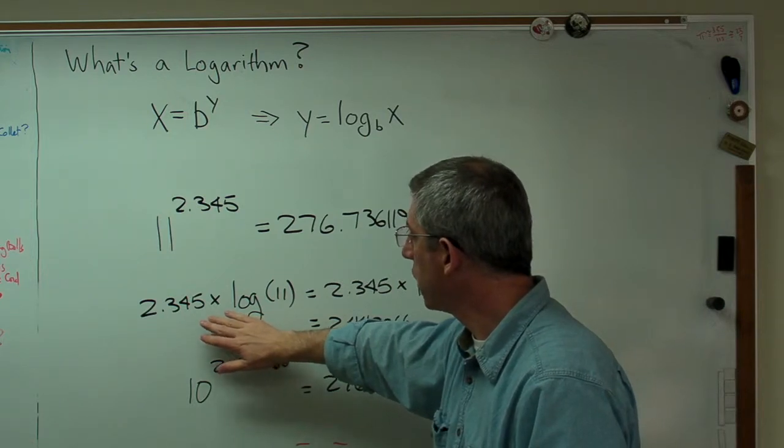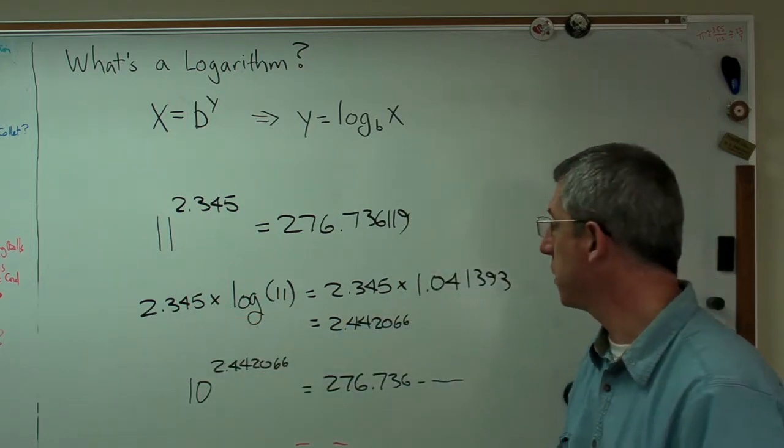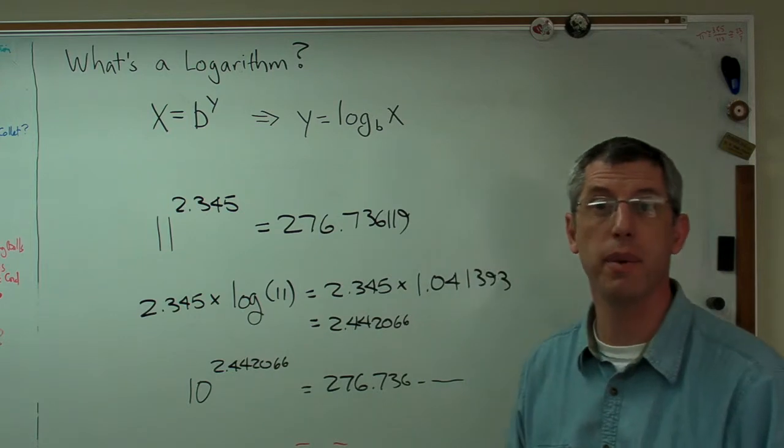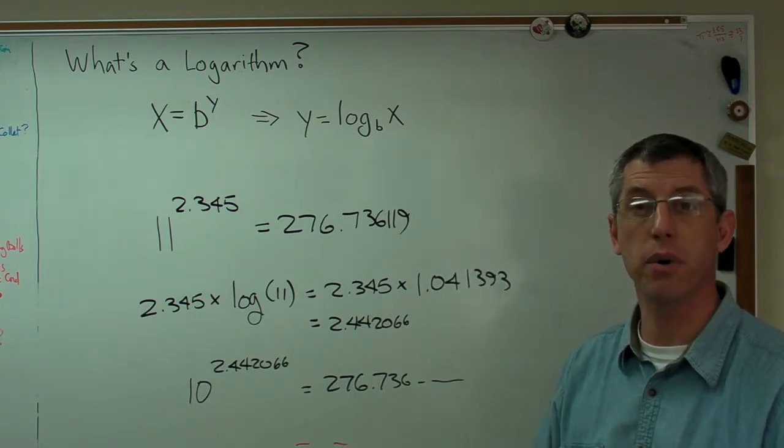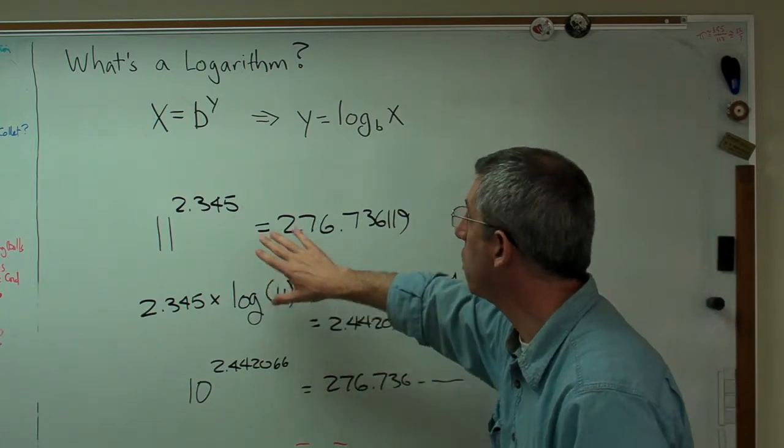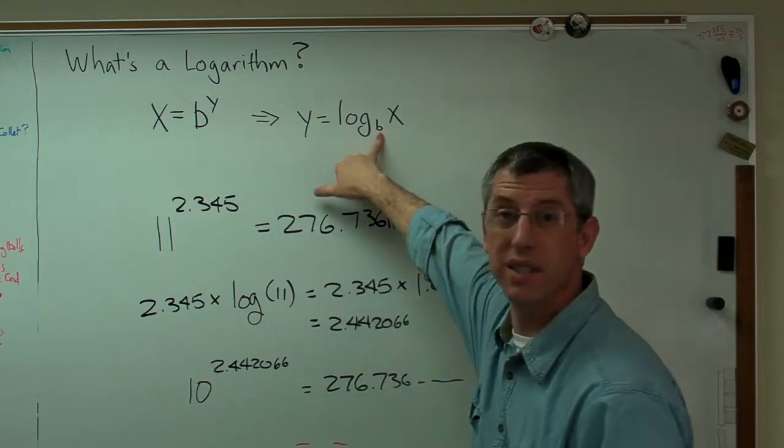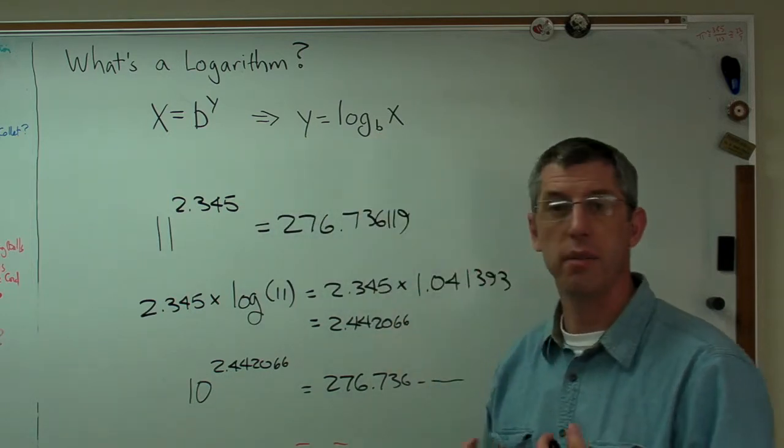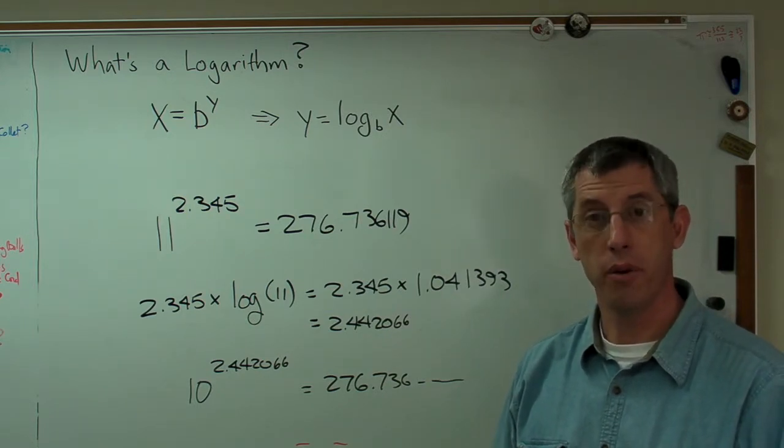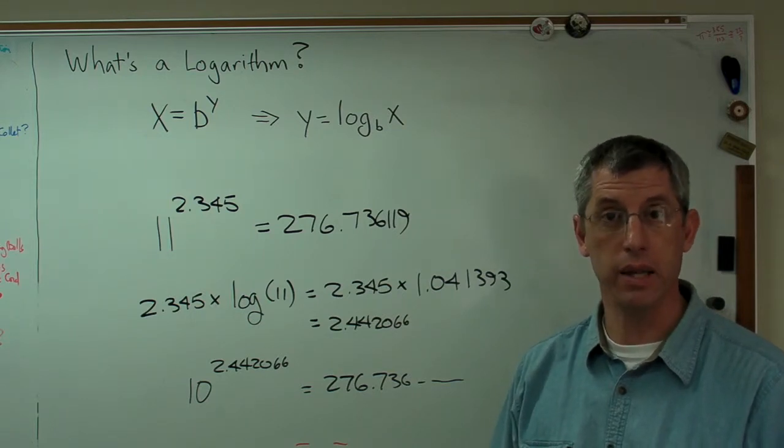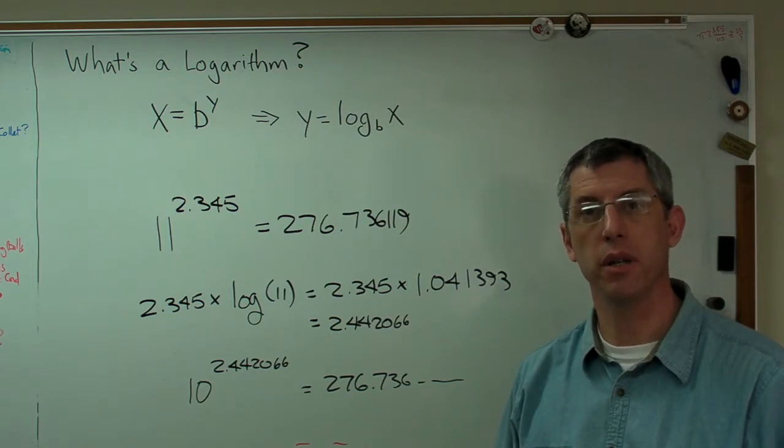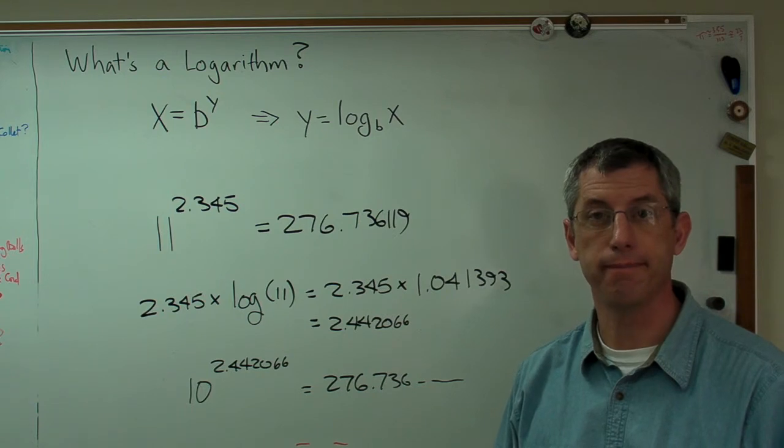John Napier was credited by some scientists with having doubled the working life of the average scientist because it took so much less time to do routine calculations. He speeded up the process of scientific advance, of mathematical advance. Now, up to now, we've been doing everything with base 10, raising 10 to various powers. I'm about out of time here. The next video is going to be on other bases, particularly base e. e is actually a number like pi. Logs to the base e are called natural logarithms, and I'm going to tell you a little bit about those and where e came from.